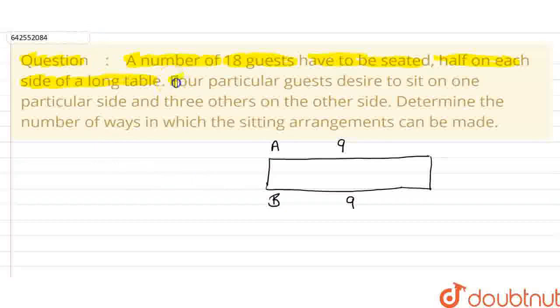Let's read the question further. 4 particular guests desire to sit on one particular side and 3 other guests on the other side. So, we have to determine the number of ways in which the sitting arrangement of these guests can be made.